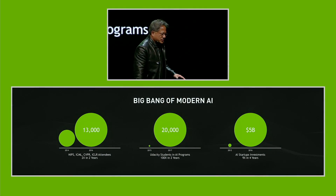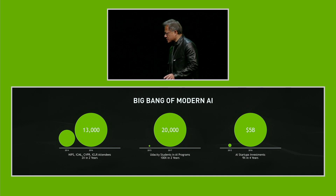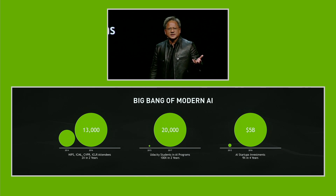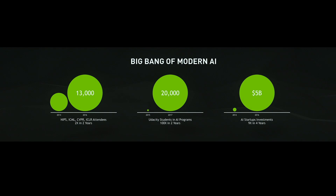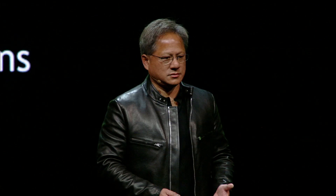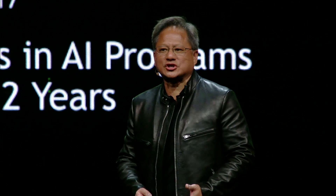The AI revolution is well on its way. It started with the Big Bang in 2012, but since then it has grown incredibly. If you take a look at the major conferences — NIPS, ICML, CVPR, and ICLR — the attendees have doubled in two years. It's only doubled in two years because there are limitations in physical space. The number of students who want to learn deep learning has 10x'd in two years on Udacity. The number one most popular course at Stanford is CS229, Introduction to Machine Learning.